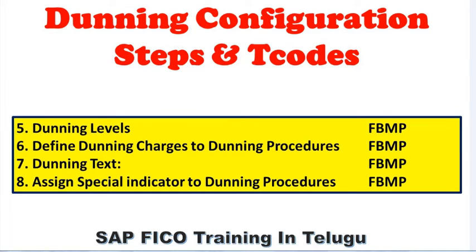The seventh one is dunning text, which can also be done with FBMP t-code. The last configuration step is assign special indicator to dunning procedure, also done with FBMP t-code. So totally eight configuration steps are there in dunning configuration.